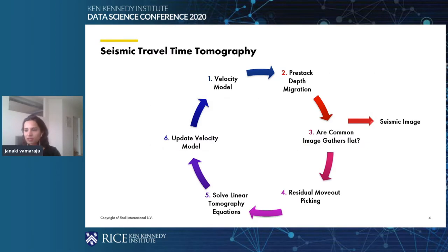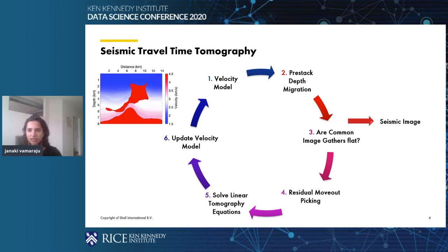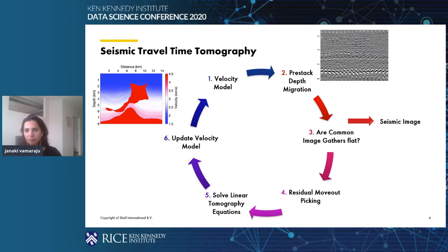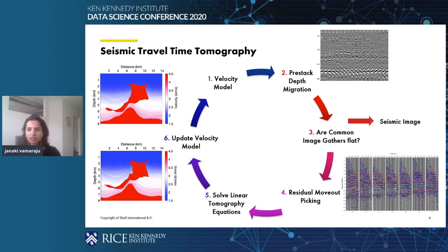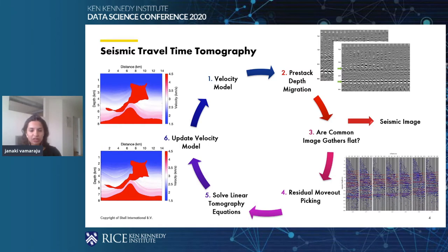Seismic tomography is a methodology that establishes the distribution of velocities in the subsurface by leveraging dense seismic observations of travel times from sources to different receiver positions. There are four central components: you begin with an initial velocity model, perform depth migration, then check if the image gathers are flat. If they are not flat, you do gather denoising or preconditioning, then perform residual moveout picking or travel time picking of these events. Using these picked events, we solve linear tomography equations and update the velocity model. This is an iterative process until the common image gathers become flat, at which point you have a good seismic image.